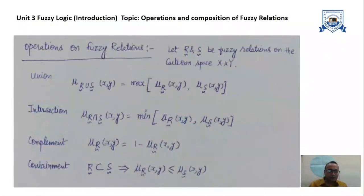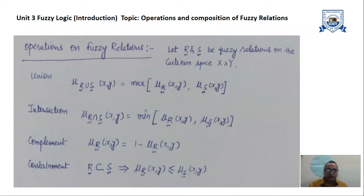Hello students. We are on Unit 3, and in this lecture we will discuss some important topics related to fuzzy logic. These topics are operations and composition of fuzzy relations. In the last lecture, you have seen how we can make fuzzy relations of two fuzzy sets which are built up on two different universes of discourse.